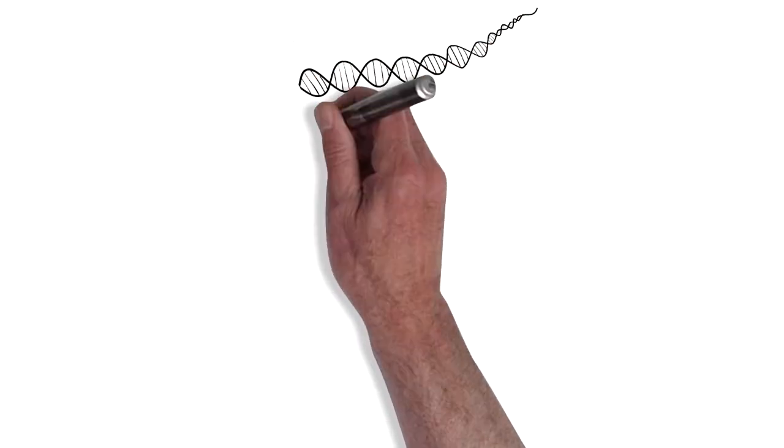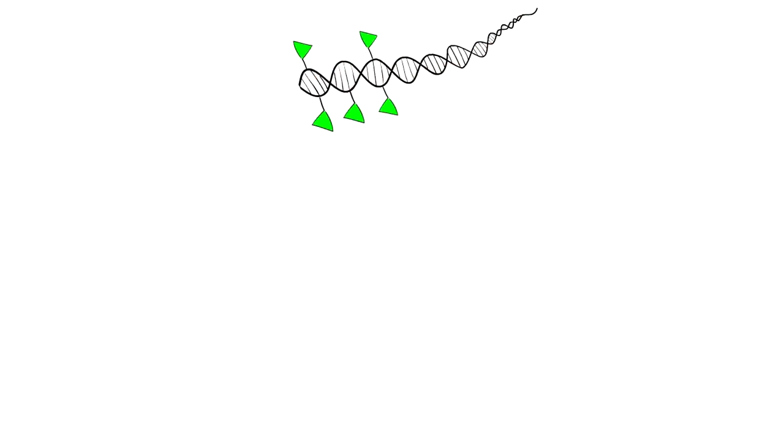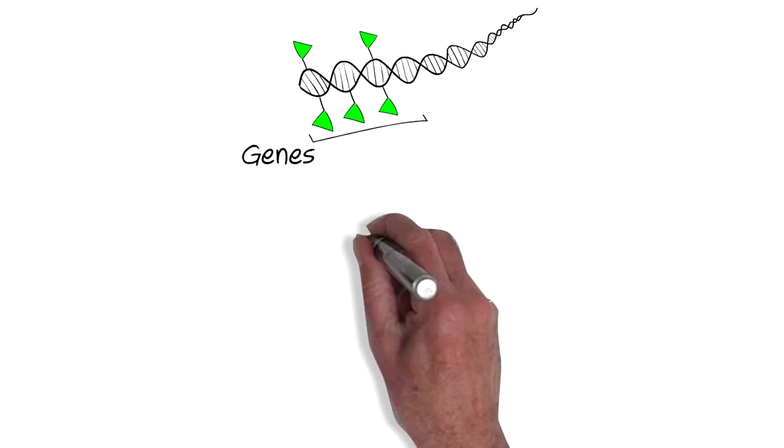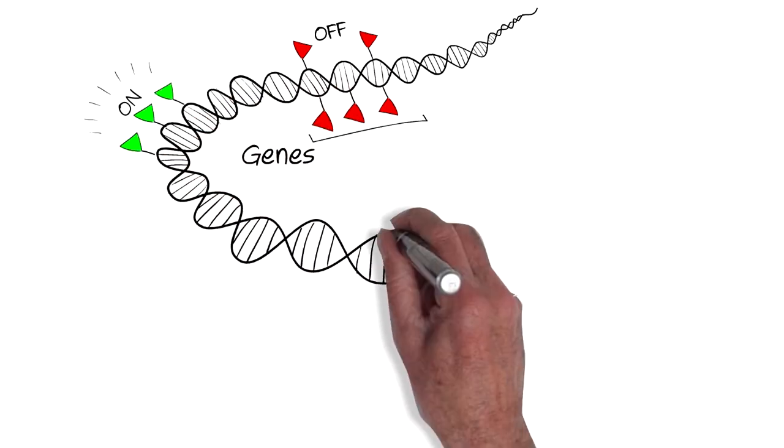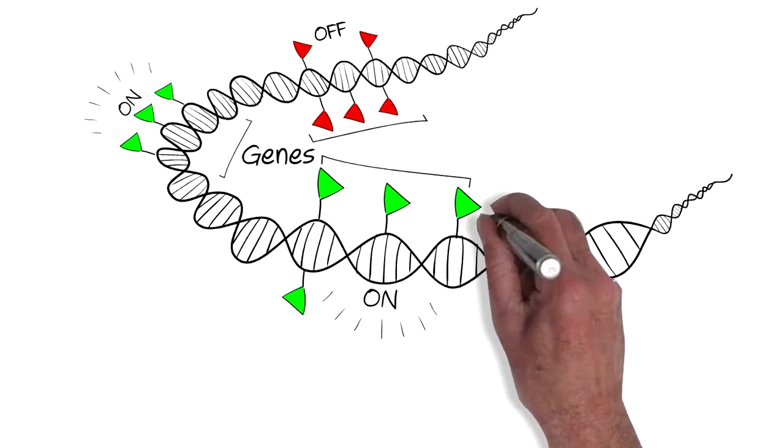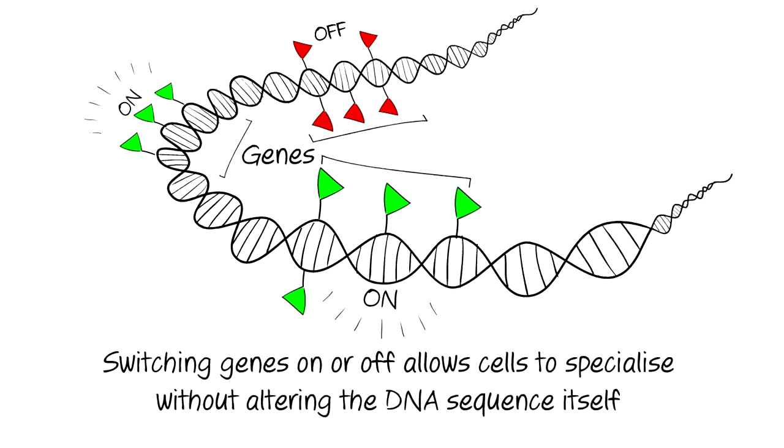This is achieved by small chemical tags that attach to the DNA and switch stretches of DNA bases called genes on or off. This process is known as epigenetics. By switching genes on or off, it allows cells to specialise for different functions.